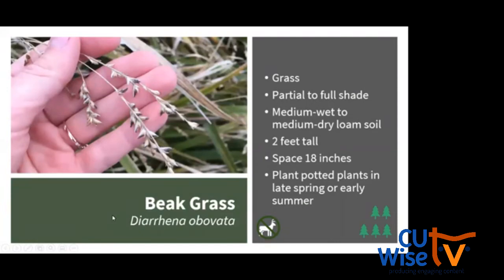Beak grass is a great choice for a lower-growing spreading grass. It does well in part to full shade in medium-wet to medium-dry loamy soil and spreads through creeping rhizomes. The leaves and seeds bend over to the side — the seeds have a really interesting shape. It's deer resistant and has been found to be resistant to juglone produced by black walnut trees, so if you're looking for a plant to put under a walnut tree, beak grass should be able to stand up to that. The leaves turn tan in fall. Choose a potted plant to put in during late spring or early summer.